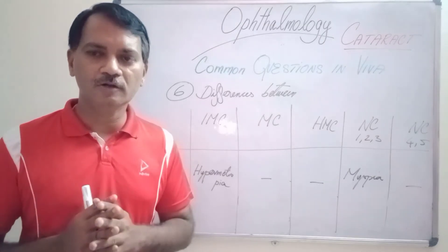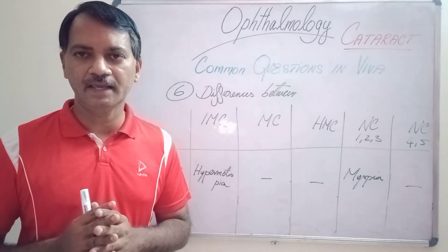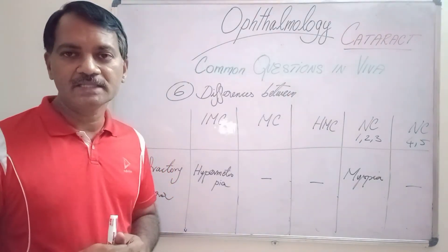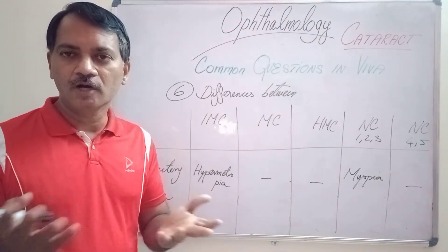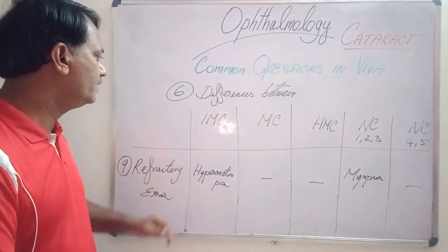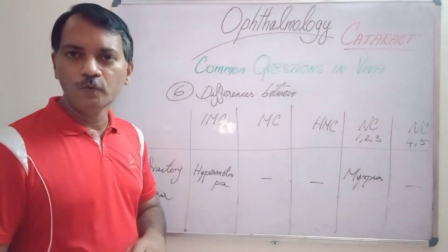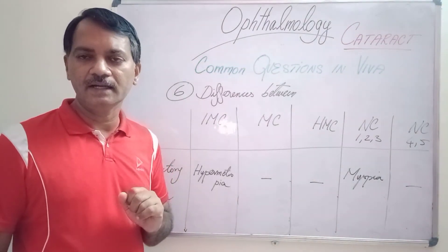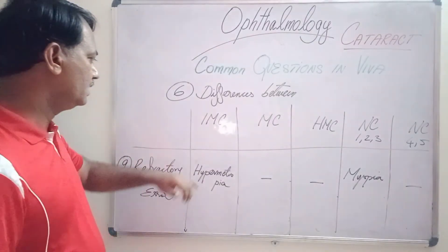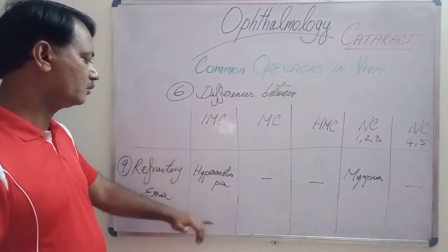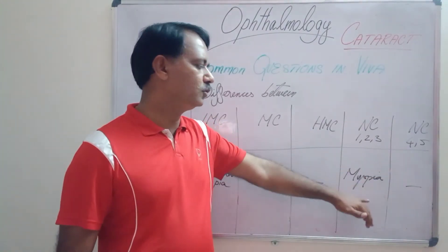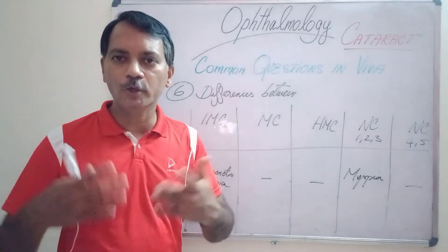Regarding refractive error in these cataracts: when there is increased opacity, you cannot assess any type of refractive error. But in immature cortical cataract and nuclear cataract, you can assess and give spectacle corrections. Most commonly, in immature cortical cataract, you will have hypermetropia. In nuclear cataract grade 1, 2 and 3, the patient will have myopia.